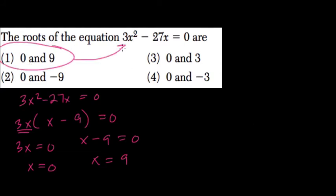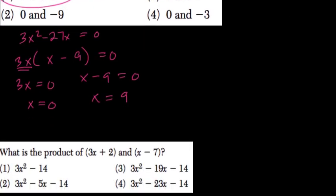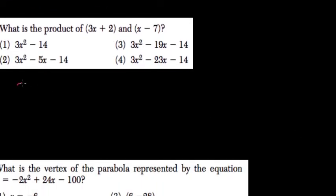You can just plug them in and see if they work. If you plug in these numbers and you get zero for both, then they're both roots. What is the product of 3x plus 2 times x minus 7? Well, here we just use the distributive property.